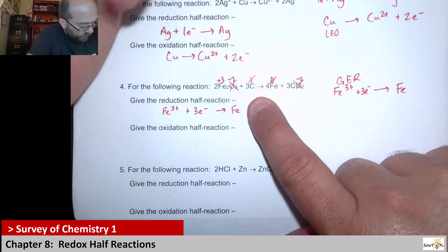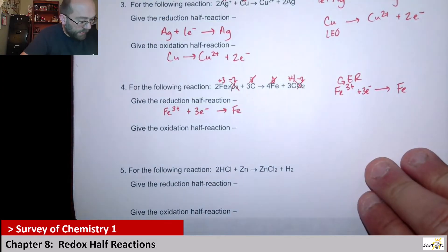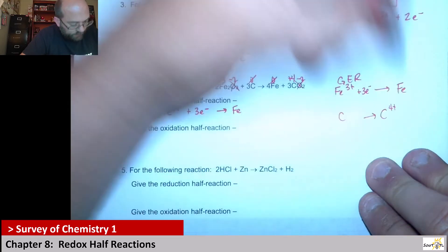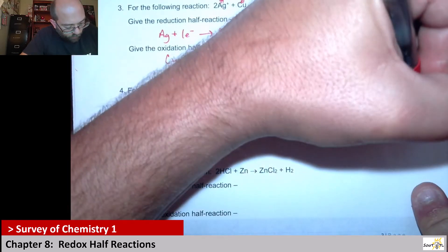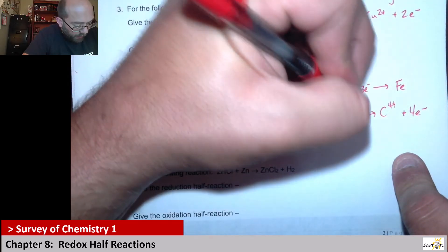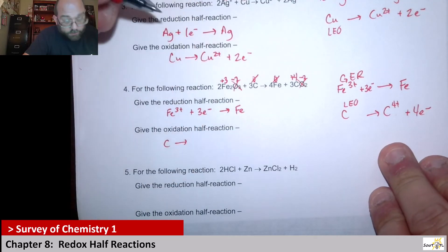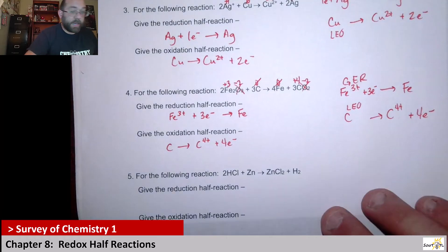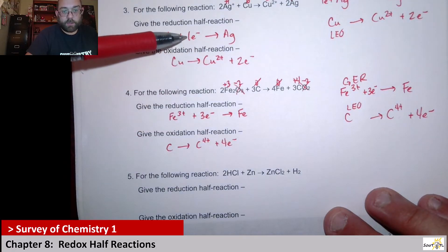Next up we have carbon. Carbon goes from zero to plus four. So I would say carbon going to carbon four plus. I need to add electrons to balance the charge — I'm going to have to add them on the product side, because this is neutral. So if I'm adding four electrons, that gives me neutral on both sides. That looks like it's losing electrons — LEO. That's definitely an oxidation. So carbon produces C⁴⁺ and four electrons. Oxidation has electrons on the product; reduction has electrons on the reactant side.